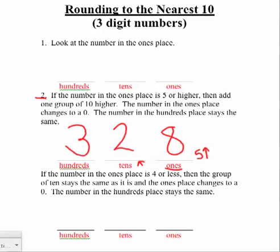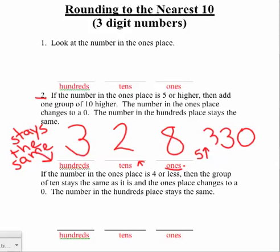So my tens place will turn to a 3, the number in the ones place will change to a 0, and the number in the hundreds place stays the same. I changed my number in the tens place to one group of ten higher, my number in the ones place is 0, so my new number is 330.